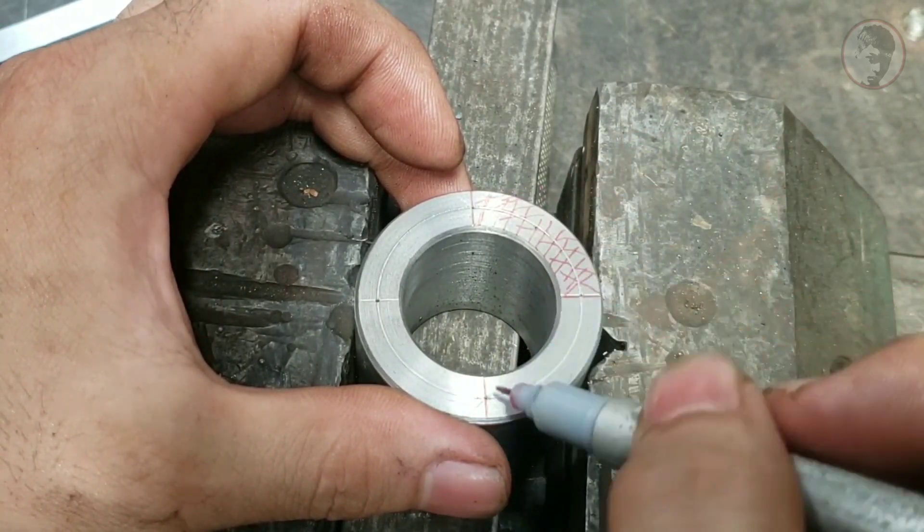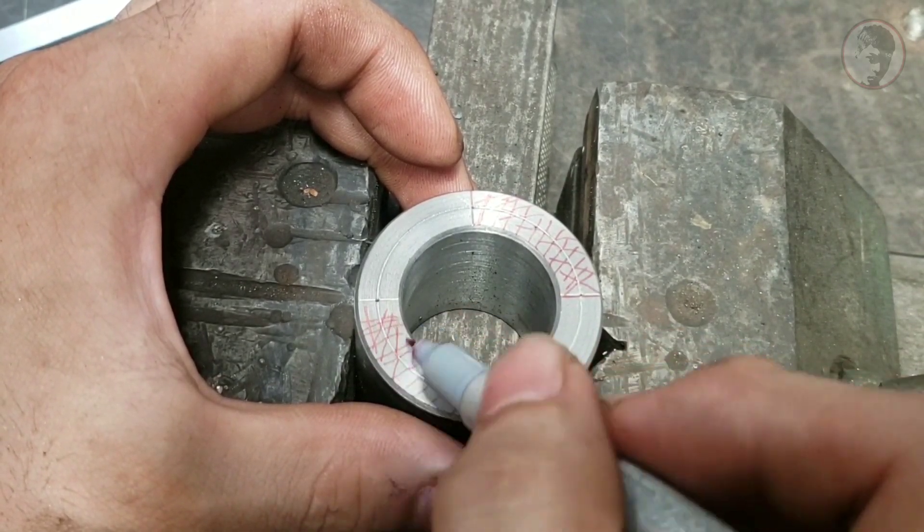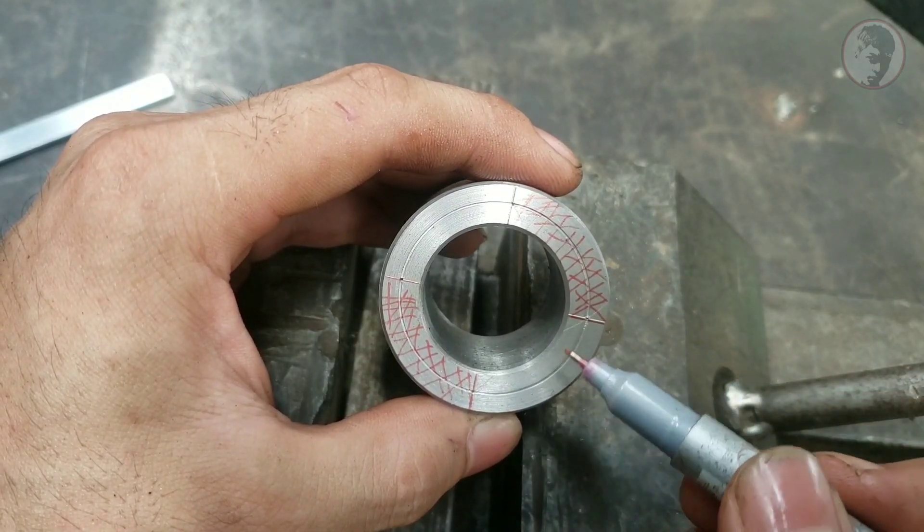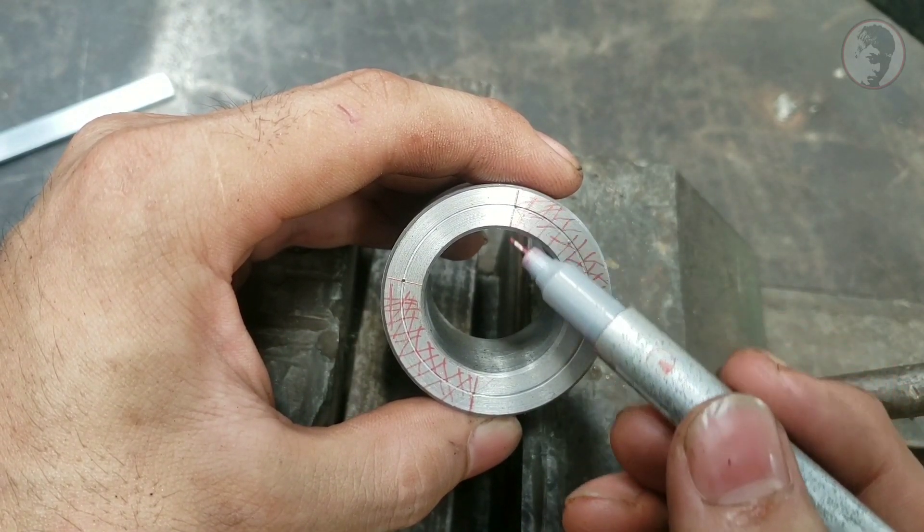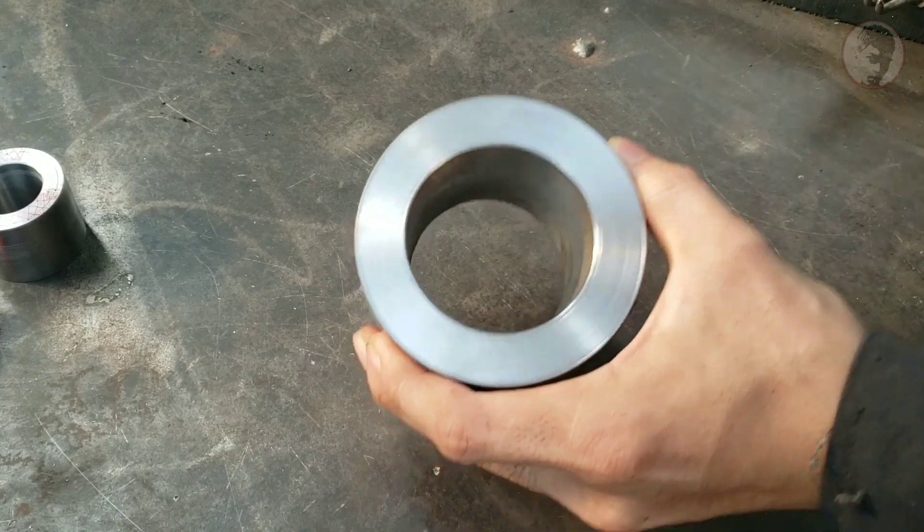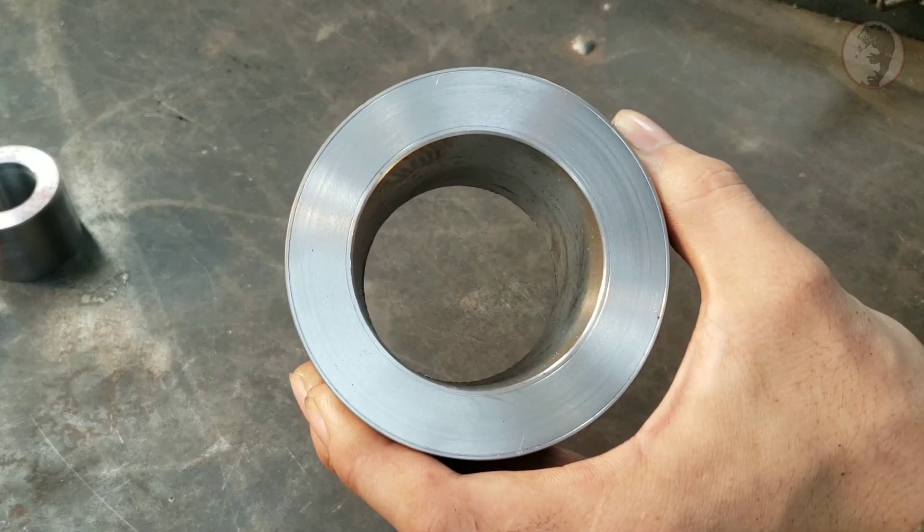Và mình chỉ cần phai bỏ đi 2 phần đối diện nhau là sẽ tạo ra được một biên dạng khớp nối 2 răng. Đây là loại khớp nối 2 răng, còn đối với khớp nối 3 răng mình sẽ có một ví dụ khác.